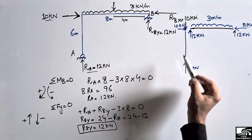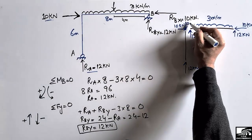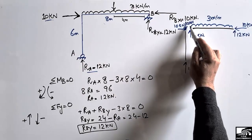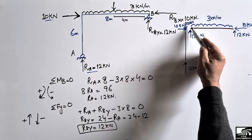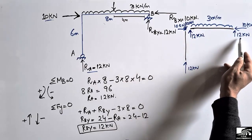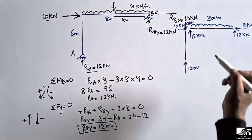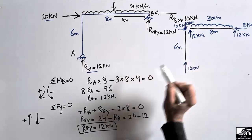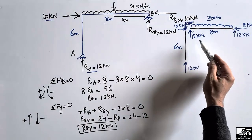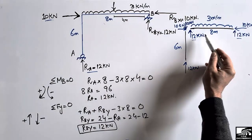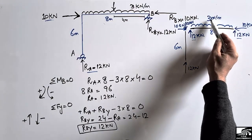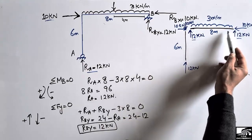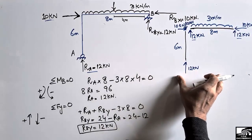The 12 kN is transferred to the beam acting downward, and the 12 kN reaction acts upward to maintain equilibrium. The total beam load is 3×8 = 24 kN, and 12 + 12 = 24 kN, confirming the whole frame is in equilibrium. Now to draw the shear force and bending moment diagrams, we first draw the reference lines for the column and beam.